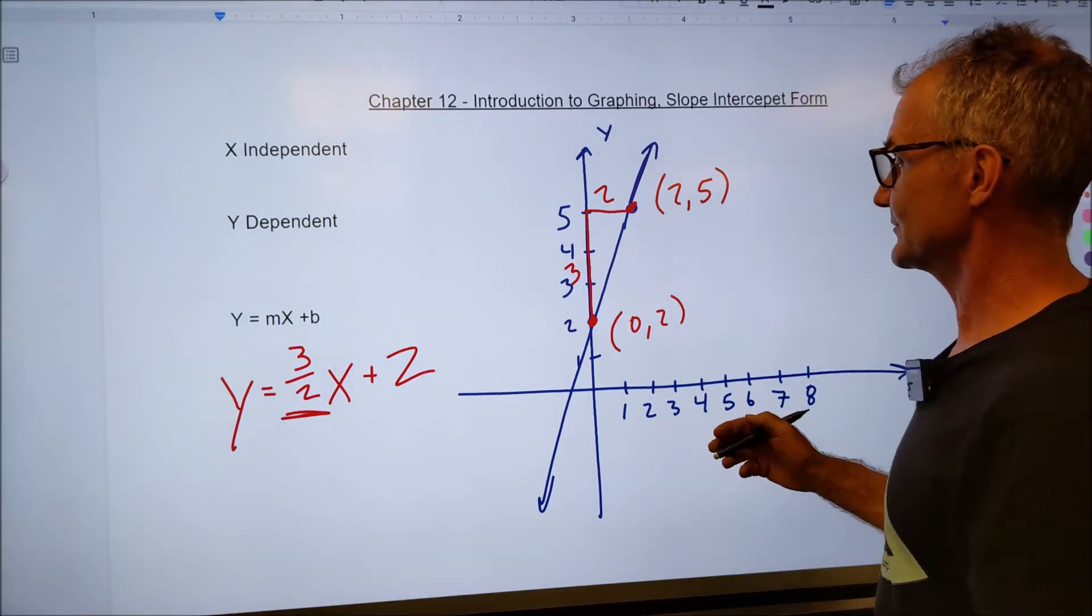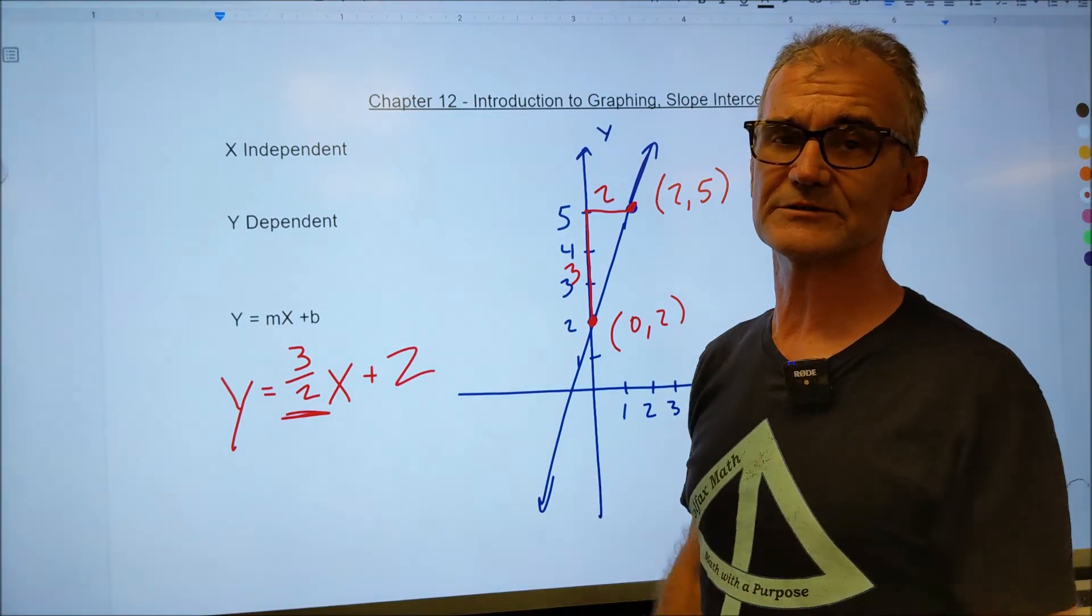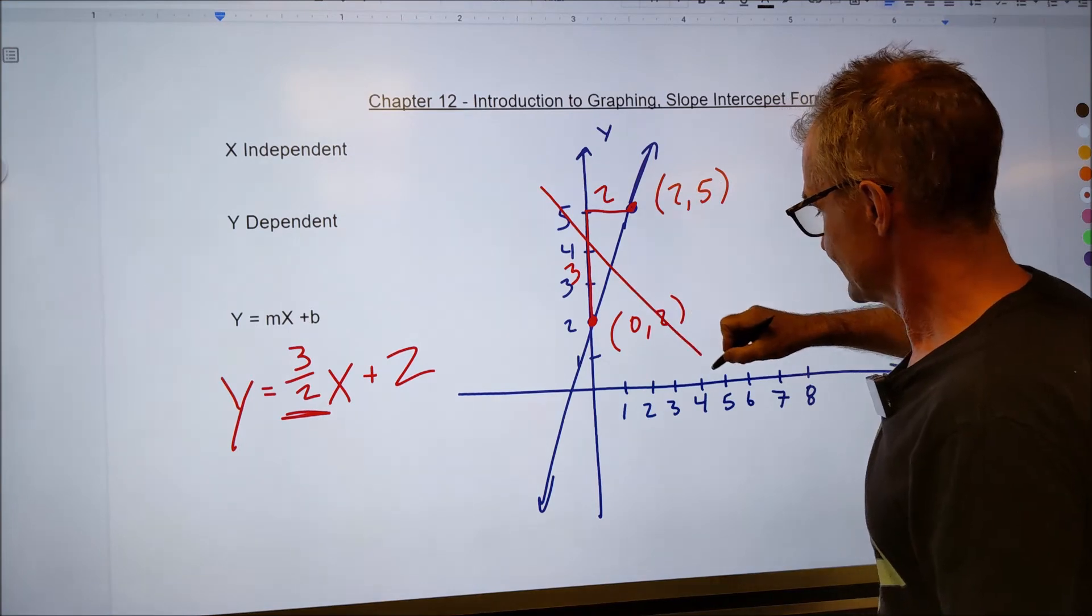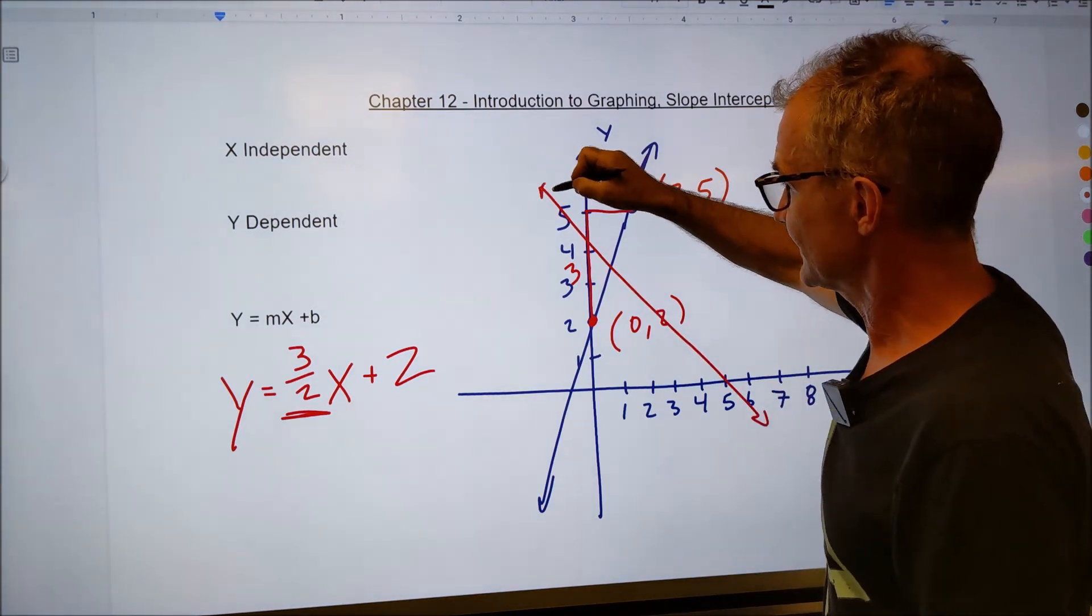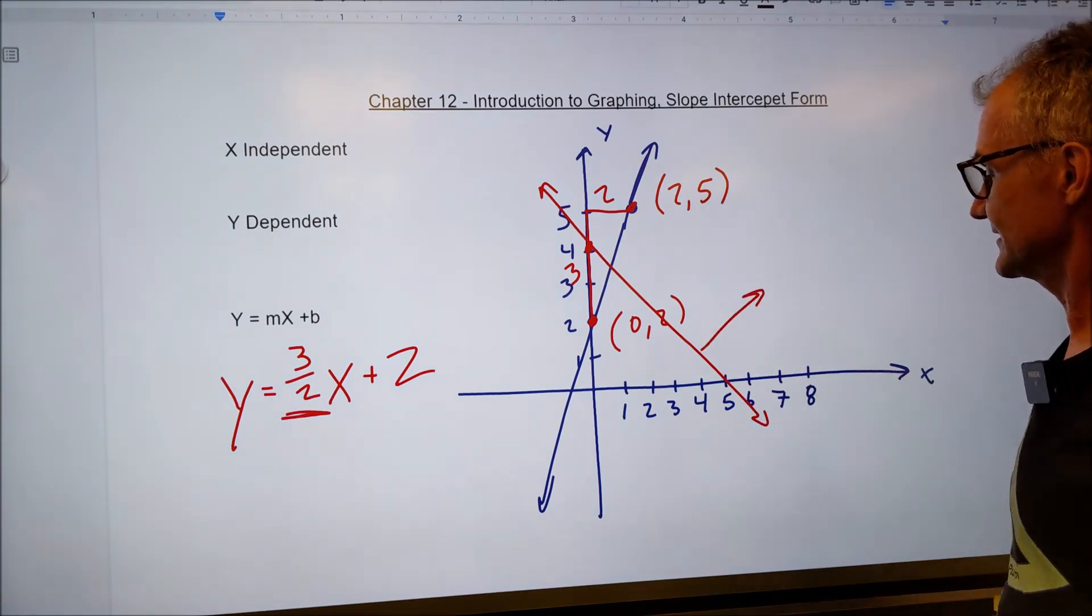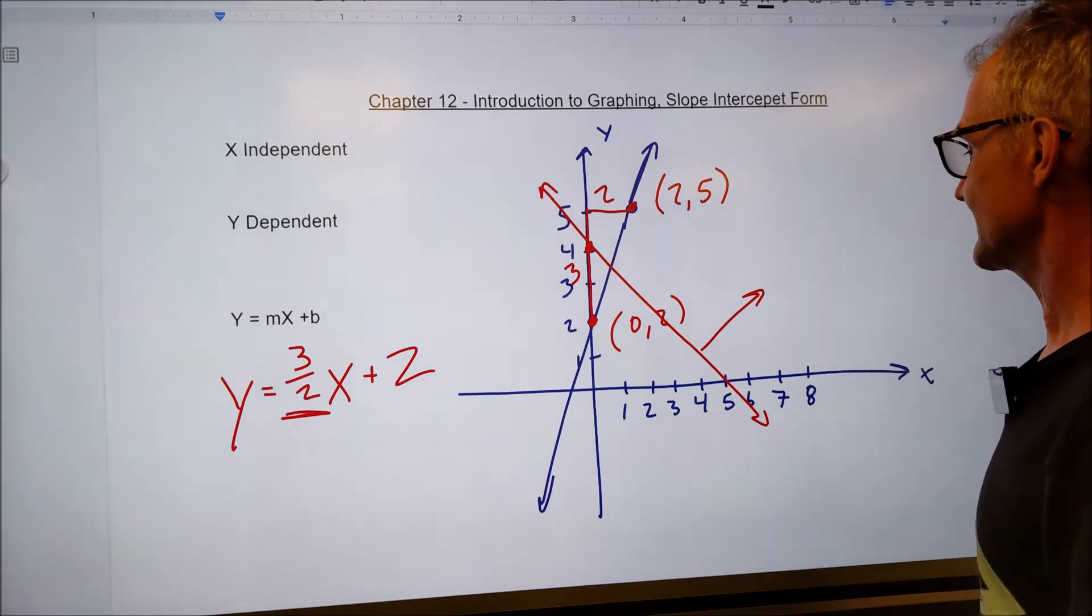If I pick different points, it would have worked out the same. I might arise six over four and I'd reduce that fraction back. If I have a line with this kind of slope right here, that's a negative slope. Let's see if we could go ahead and find the equation of this line. It's going to be negative.